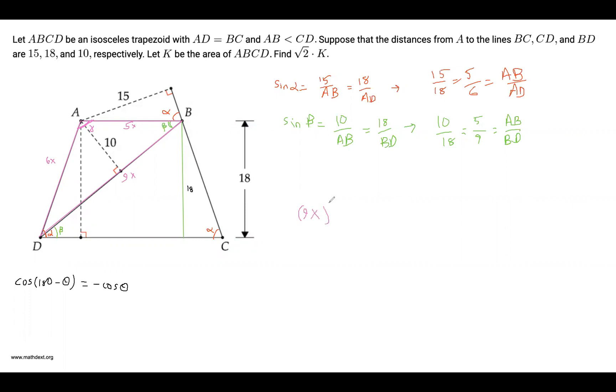9x squared equals 5x squared plus 6x squared minus 2 times 5x times 6x times cosine of gamma. And we can rearrange it something like this.